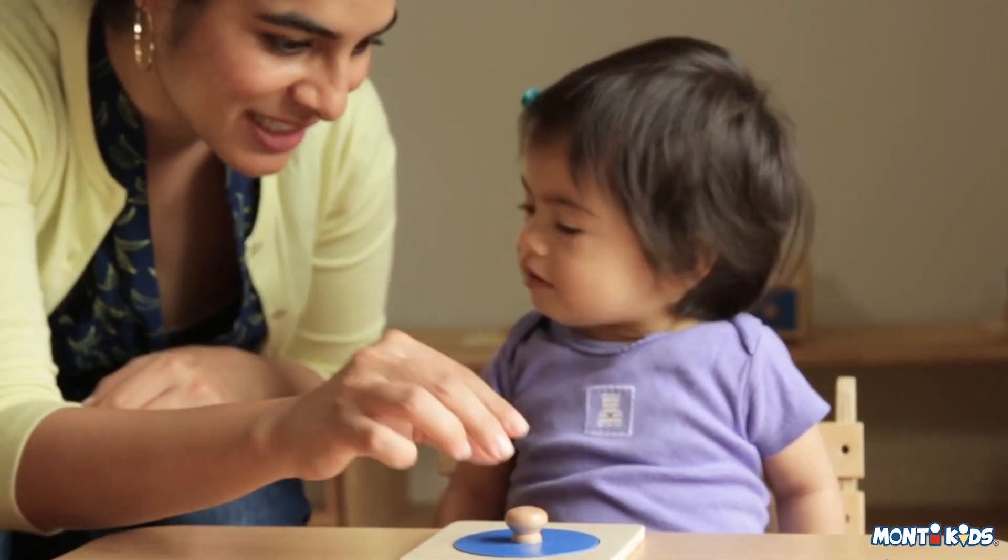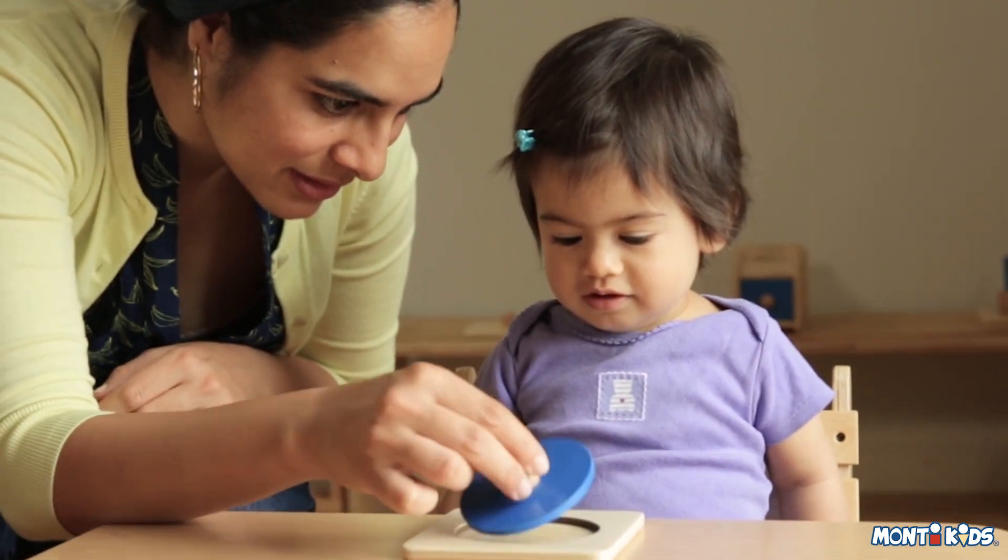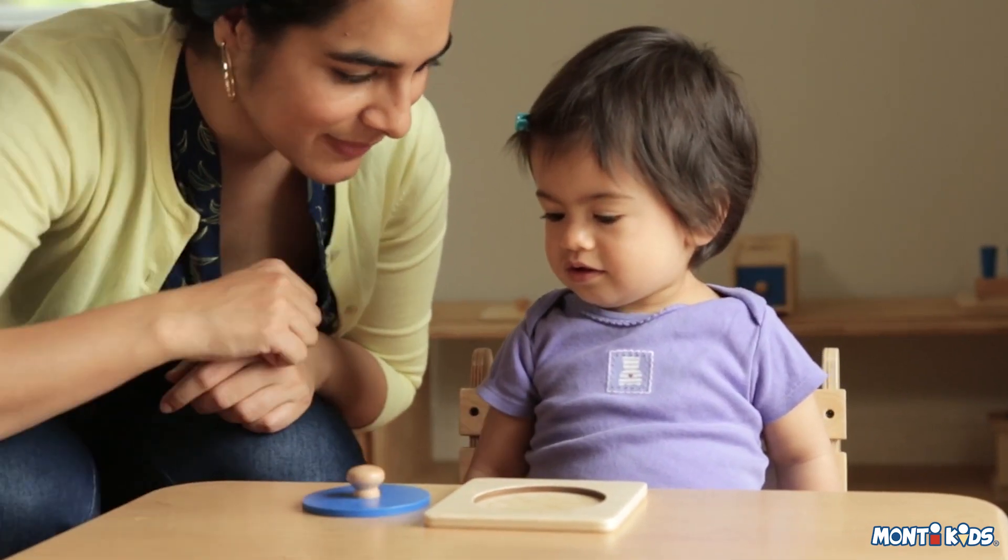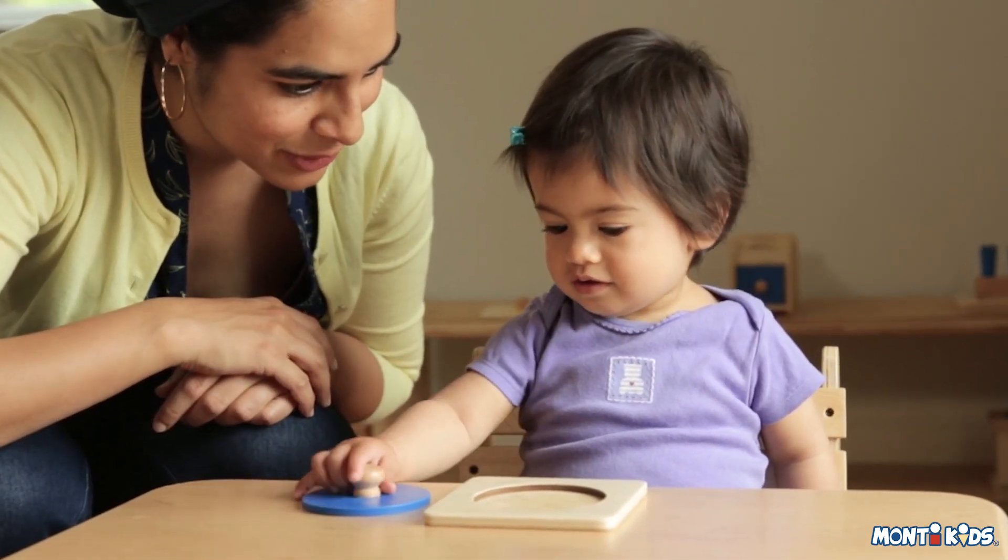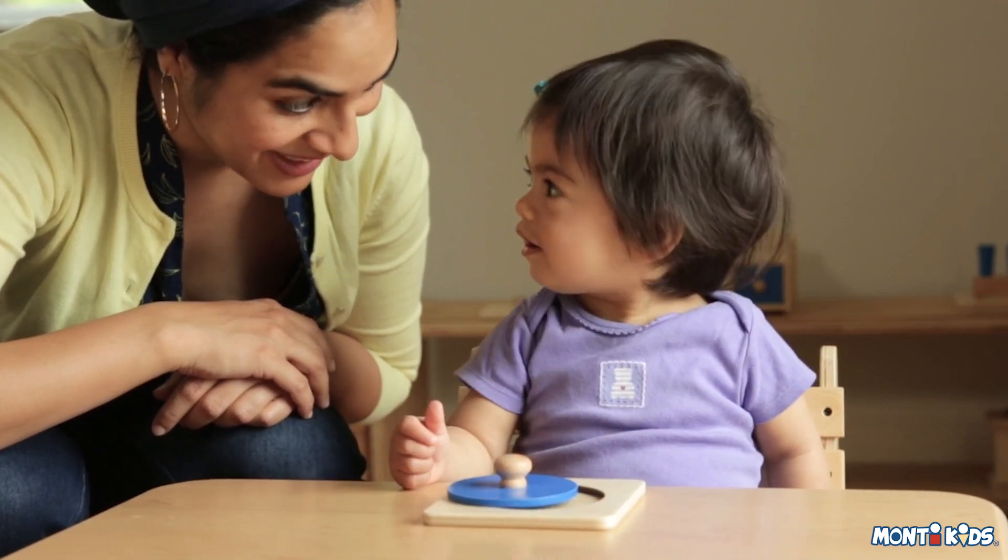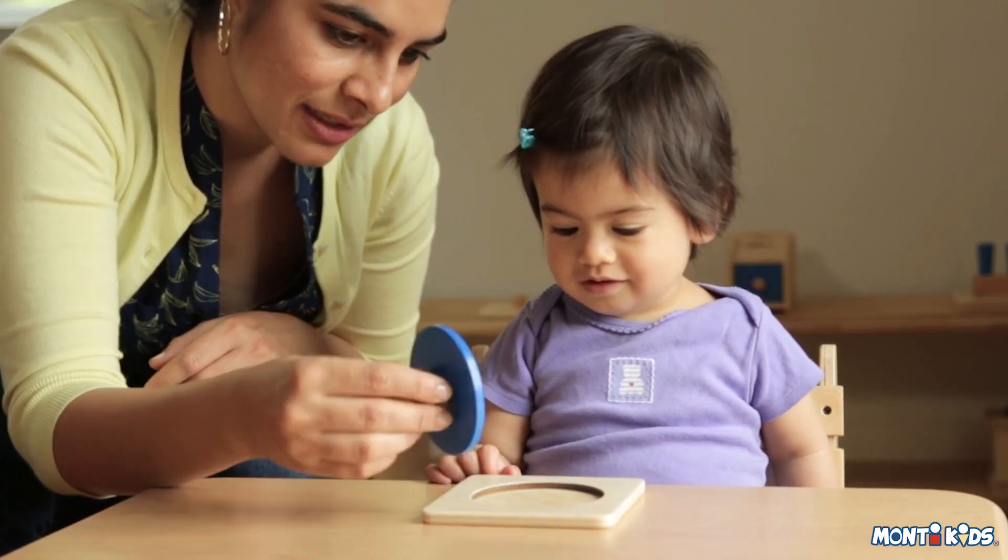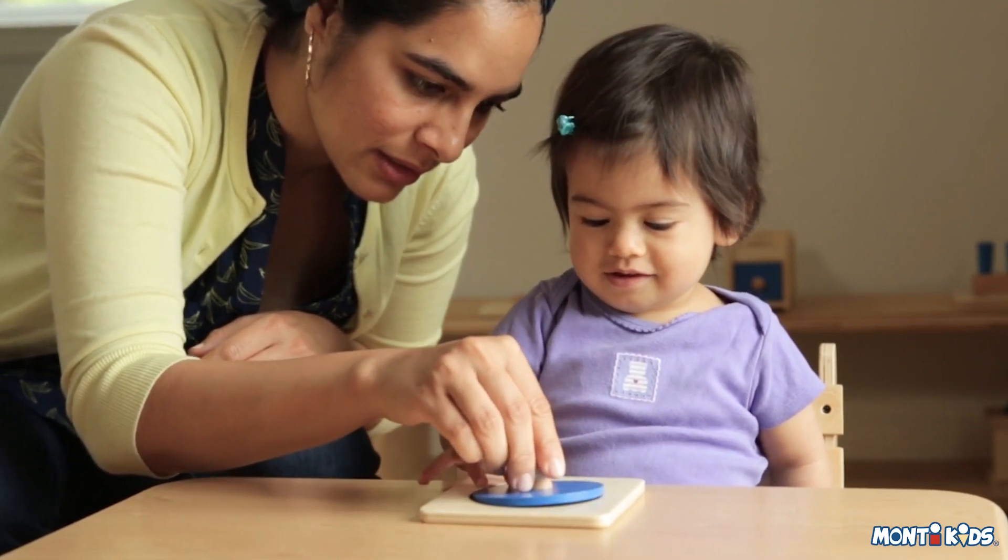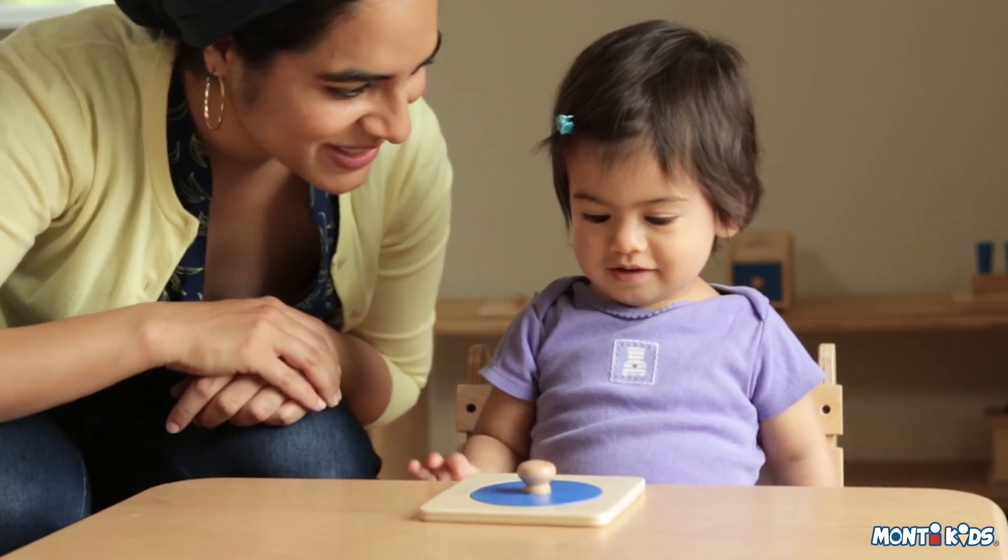Present this toy to your child at a small table. Remember, the goal is not for her to copy you exactly, but rather to introduce her to the toy so she can explore and figure it out in her own way. She may be eager to play, but gently refocus her attention. A clear presentation helps to set your child up for success.